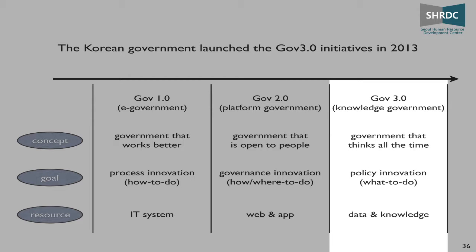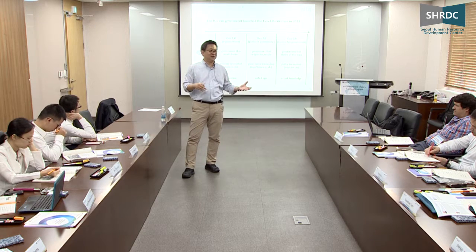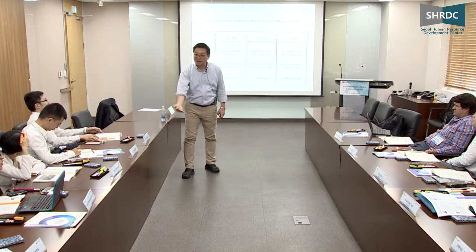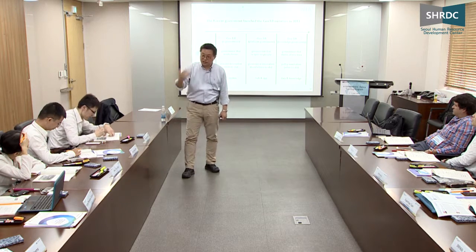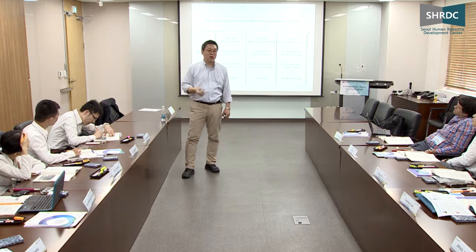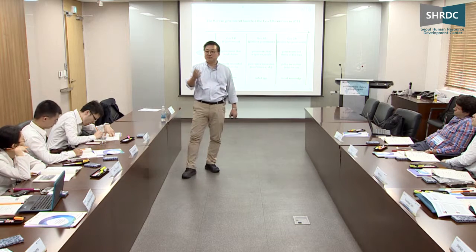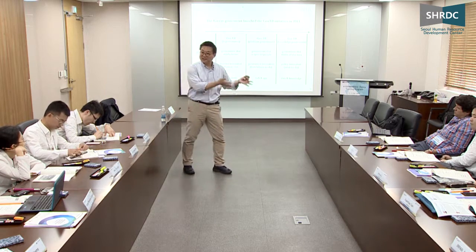This is my interpretation, not the official interpretation: Government 3.0 is a government that thinks all the time. Currently, governments stop thinking after they make a policy. Until a policy is made, the government studies, analyzes, and discusses. But once a policy is made, the government stops thinking and just tries to implement it.